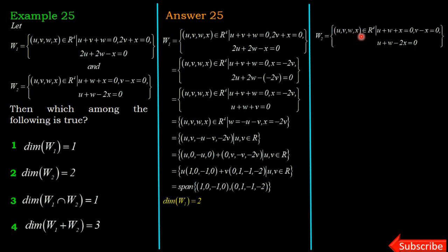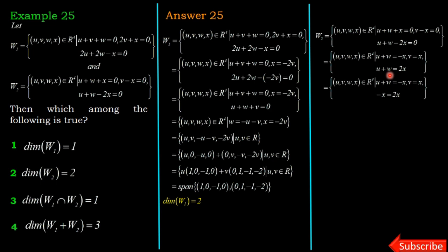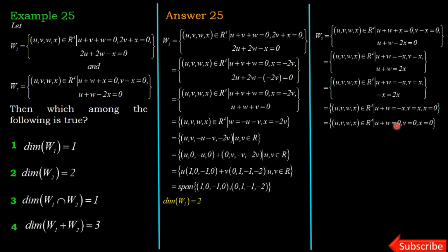For W2: the conditions are u + w + x = 0, v - x = 0, and u + w - 2x = 0. From equations 1 and 3: u + w = -x and u + w = 2x. Comparing right-hand sides gives -x = 2x, so x = 0. Then v = x = 0, and u + w = 0.